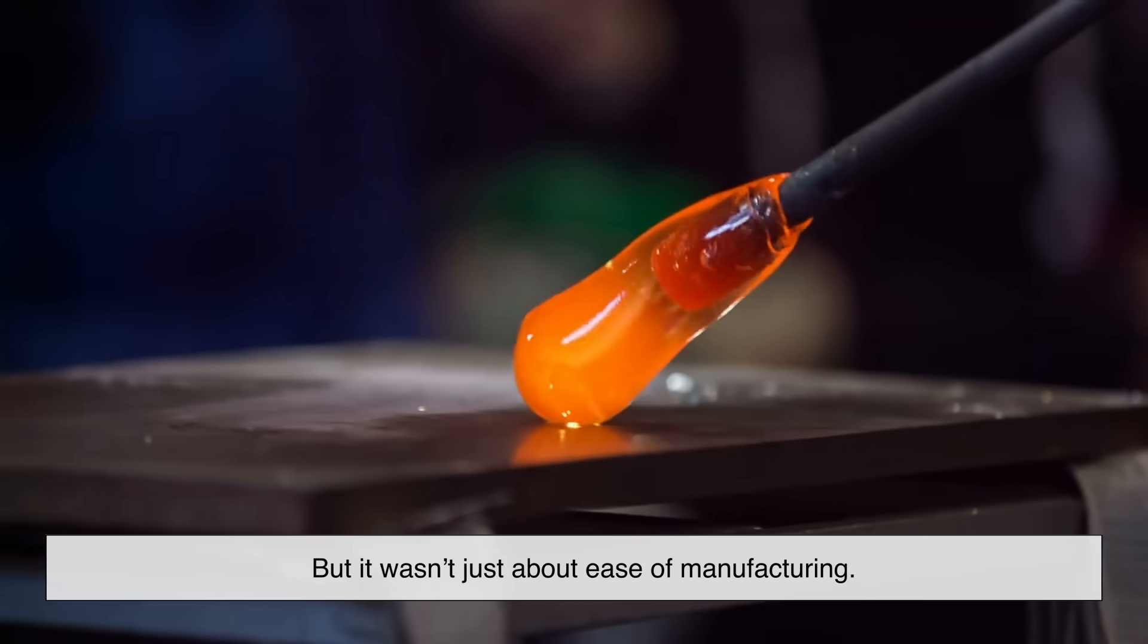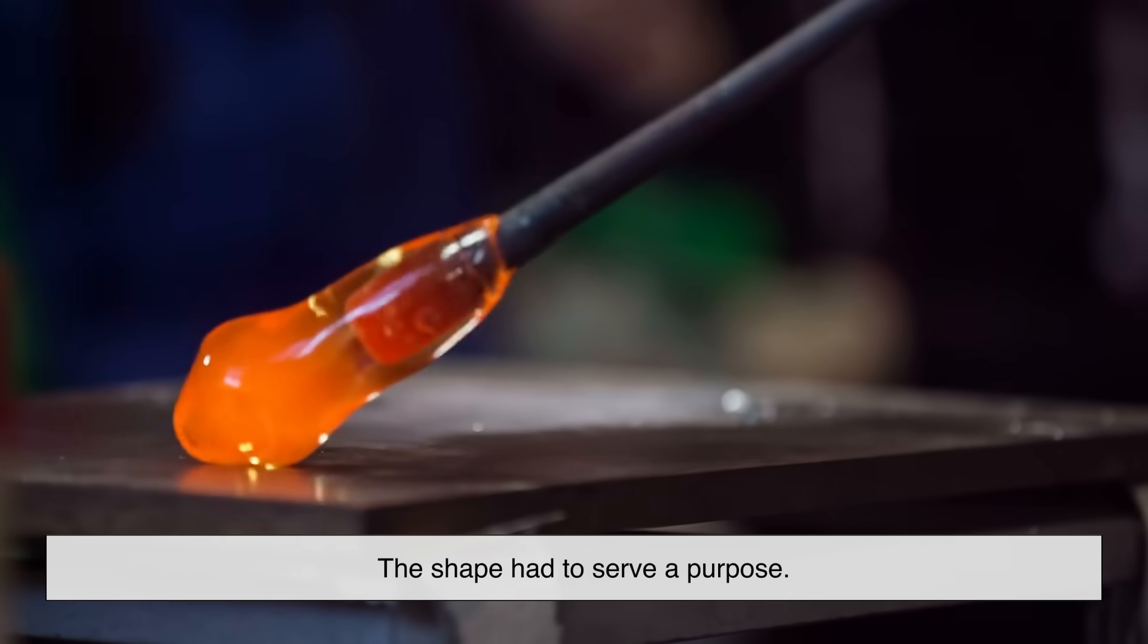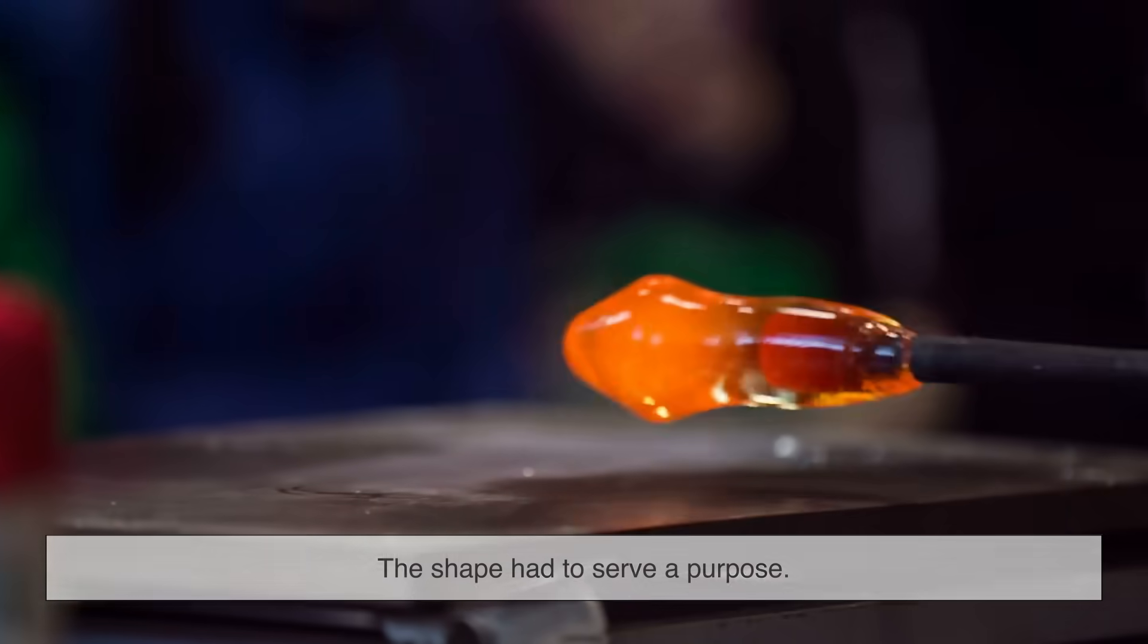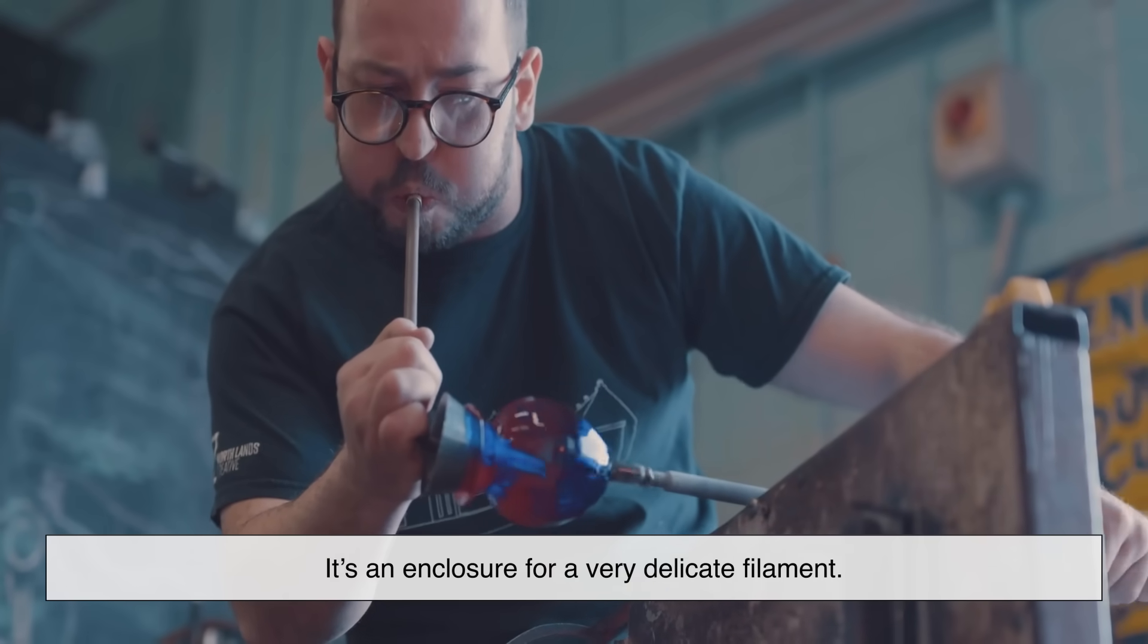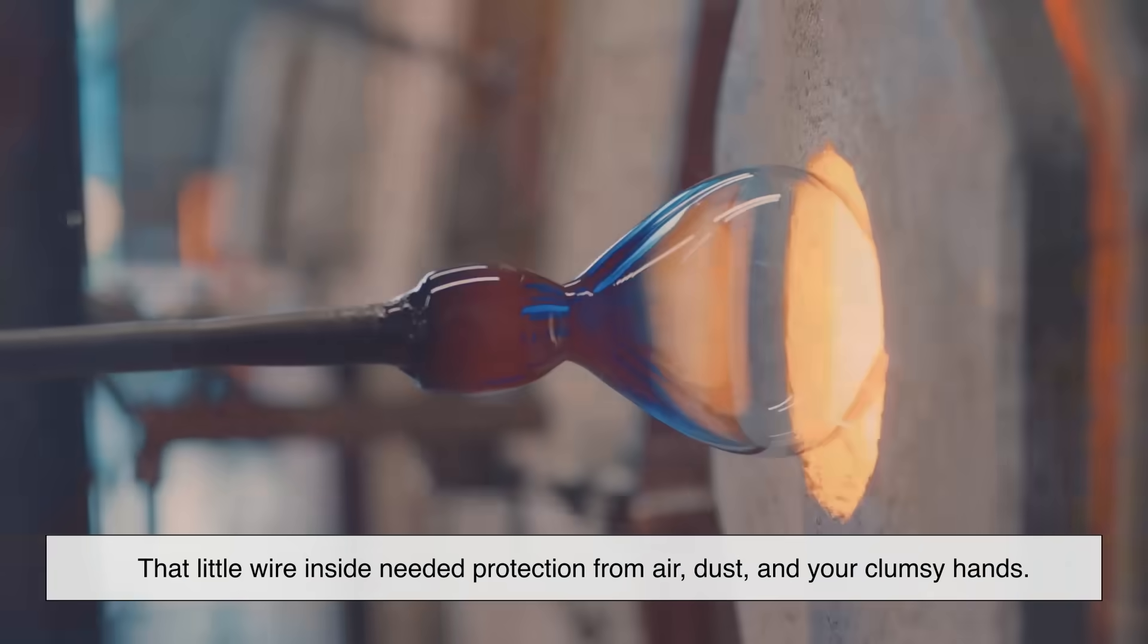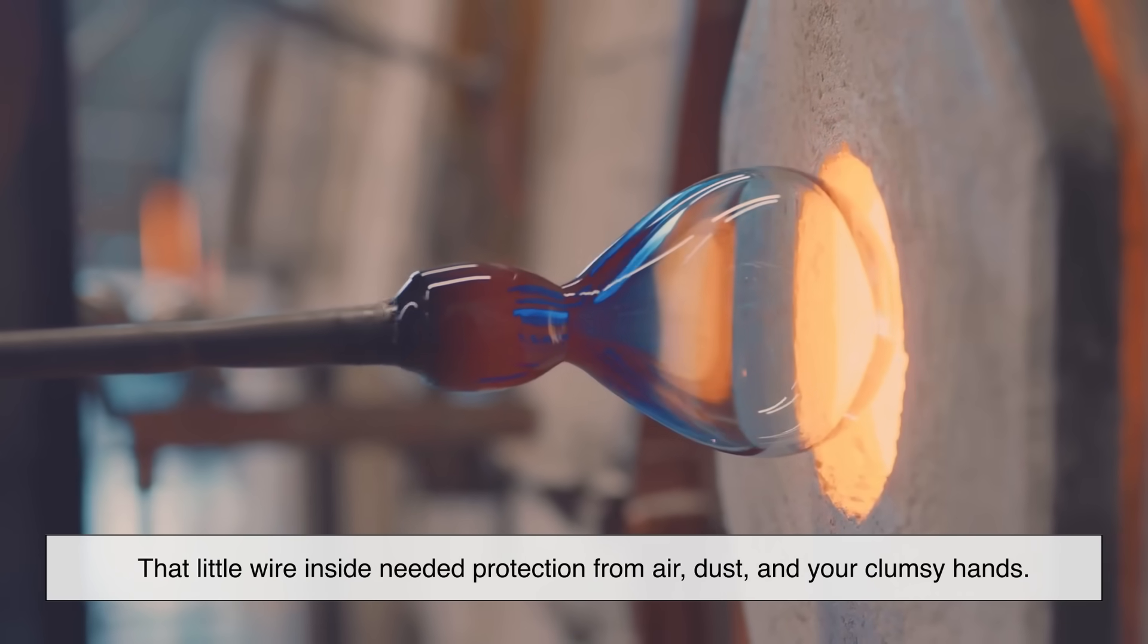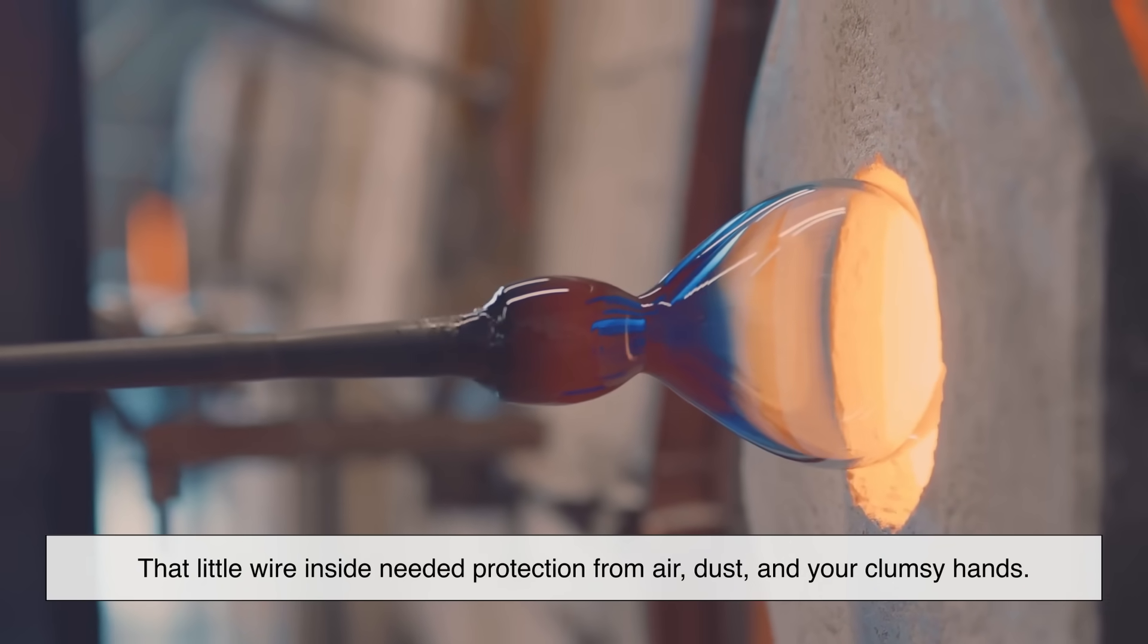But it wasn't just about ease of manufacturing. The shape had to serve a purpose. A light bulb isn't just a piece of glass. It's an enclosure for a very delicate filament. That little wire inside needed protection from air, dust, and your clumsy hands.